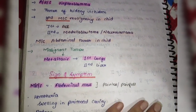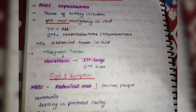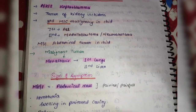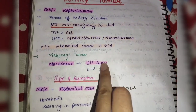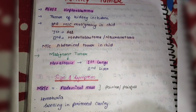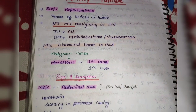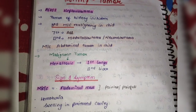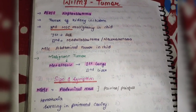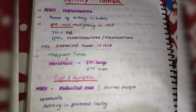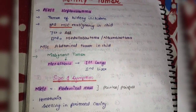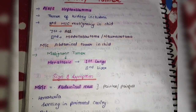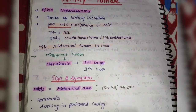ये एक malignant tumor होता है, इसका जो metastasis होता है — means ये spread होता है — सबसे पहले ये lungs में spread होता है, lungs में इसका metastasis होता है. जब अपनी local place से tumor दूसरी जगह पर spread होने लगे, दूसरे organ को भी affect करने लगे, तो उसको कहते हैं metastasis. So first इसका metastasis होता है lungs में, और second number पे liver में देखने को मिलता है.